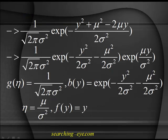Comparing, you get: η = μ/σ², f(y) = y, b(y) = exponential(−y²/(2σ²)), and g(η) = one over root(2π σ²). As already noted, η comes out to be a scalar and f(y) = y is also a scalar.